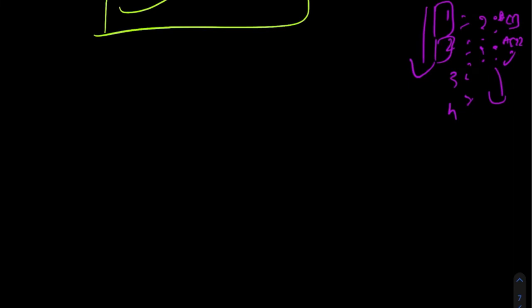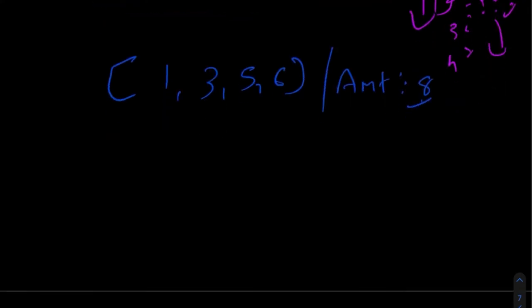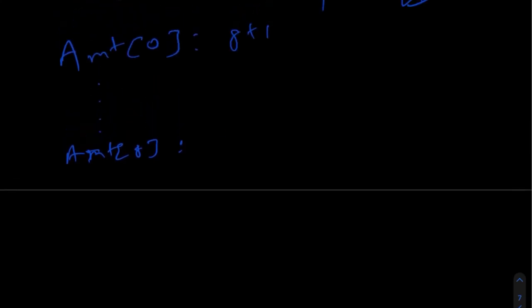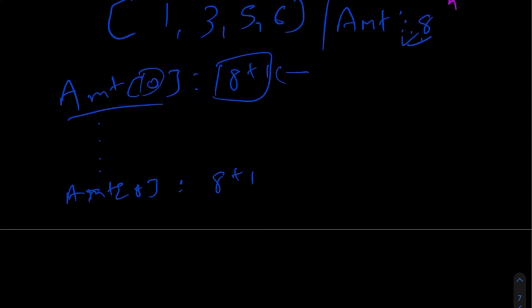Let's continue with our example: coins one, three, five, and six, and amount eight. Initially we create an array of size amount plus one — that's indices zero through eight — and initialize all values to amount plus one (i.e., nine). This represents that these are the number of coins needed to generate any particular value. We then set the base case: to generate zero, we need zero coins.